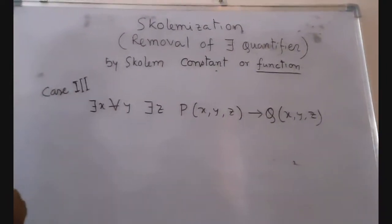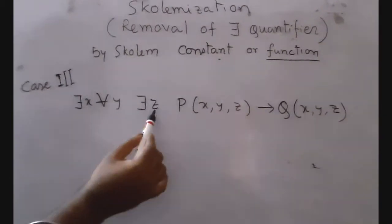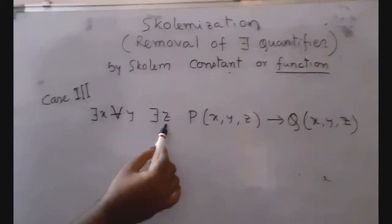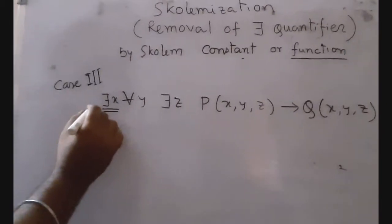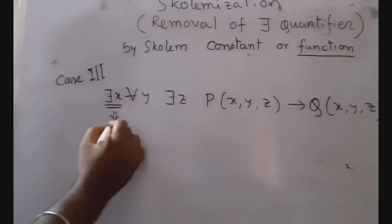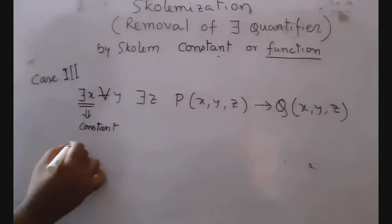In this example, we can see two existential quantifiers: there exists X and there exists Z. Before X, there is no universal quantifier, so we will replace X by a constant.